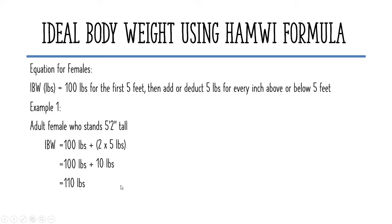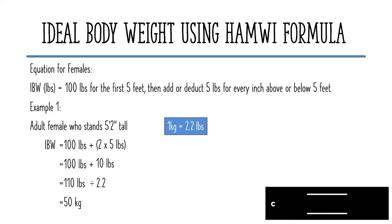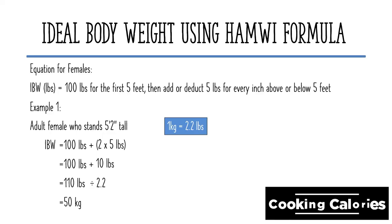To get the weight in kilograms, divide 110 pounds by 2.2. The ideal body weight of our client who is 5 feet and 2 inches tall is 50 kilograms.